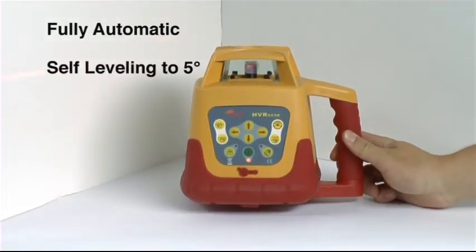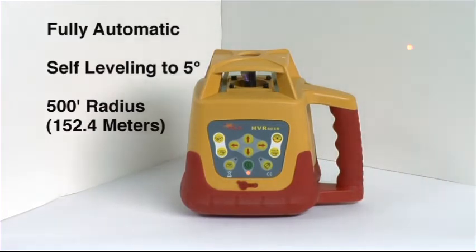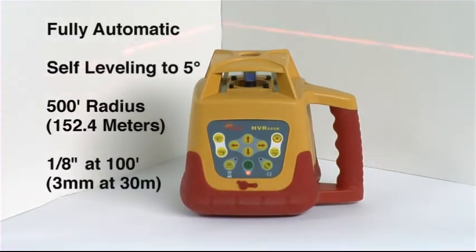The HVR-505R is fully automatic, self-leveling to within 5 degrees, has a radius range of 500 feet, and is accurate to an eighth of an inch at 100 feet.